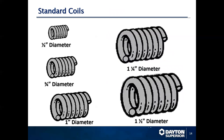Different types of coils within the marketplace: we typically run a seven-turn coil. Standard sizes are half inch, three quarter, one inch, inch and a quarter, and inch and a half in diameter.